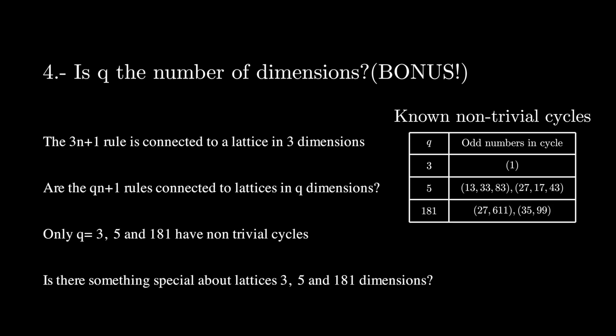And finally, a crazy one I just thought about while recording this video is this. The 3n plus 1 rule is connected to a lattice in 3D space. Could the qn plus 1 rules be related to lattices in q-dimensional spaces? Because if that's the case, there could be something special about spaces with 3, 5, and 181 dimensions, since these are the only rules that are known to create loops.